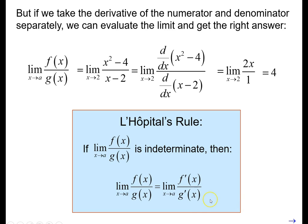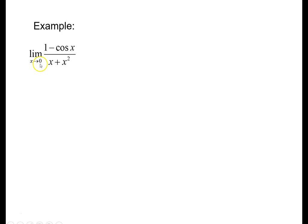Let's do an example: the limit as x approaches 0 of (1 minus cosine x) divided by (x plus x squared). Using direct substitution, cosine of 0 is 1, so we get 1 minus 1 over 0, which is the indeterminate 0/0 form. Applying L'Hopital's rule, the derivative of the numerator is sine x, and the derivative of the denominator is 1 plus 2x. Now using direct substitution, we get sine of 0 divided by 1, which is 0. That is not indeterminate — 0 divided by a number is 0 — so the limit is 0.